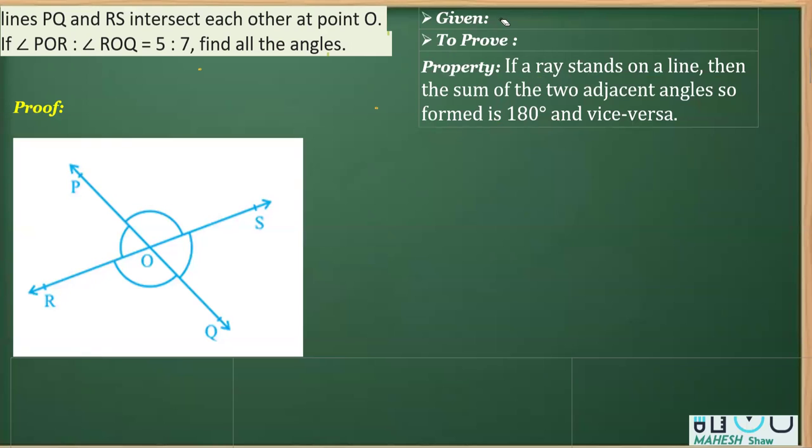We are given line PQ and RS. They intersect each other at point O. So it's already mentioned that this is RS and this is PQ are given lines. Further, what do we know is that the ratio of these angles is given here.